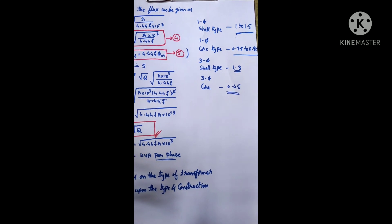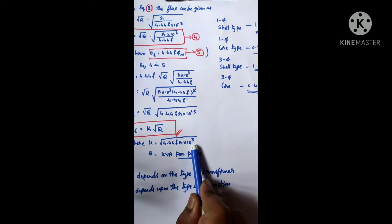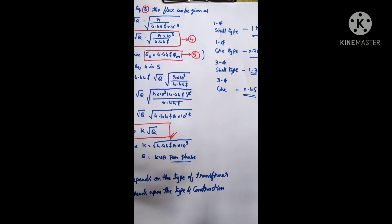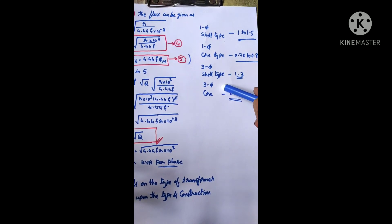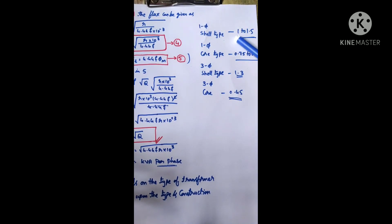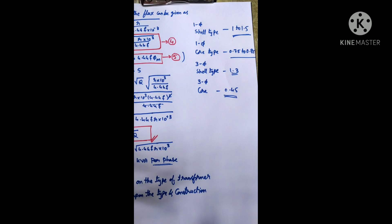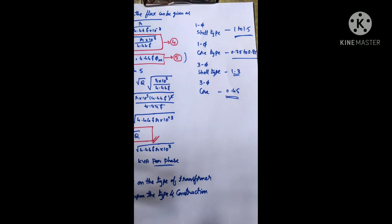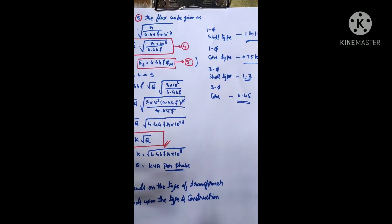In some problems the K value will be given directly, or you can calculate it using the formula. Sometimes design parameters are given and you select a value from within the appropriate range based on the given data. You will understand this in detail when we solve problems. I hope the EMF per turn expression is clear — please like, share with your friends, comment, and don't forget to subscribe. Thank you.